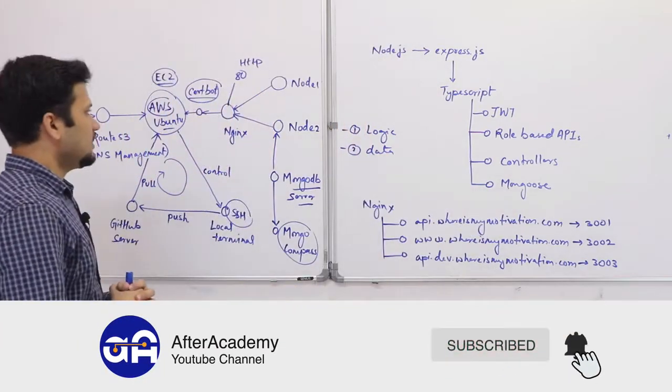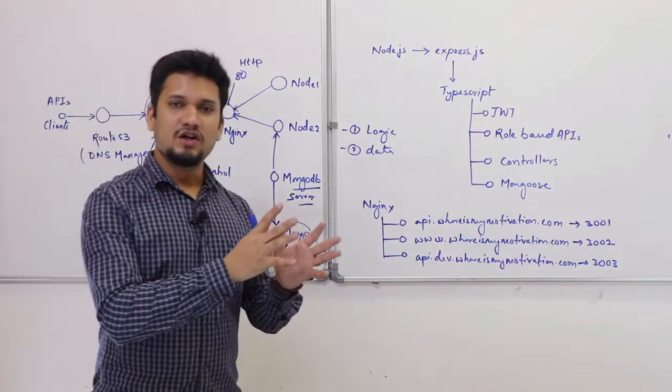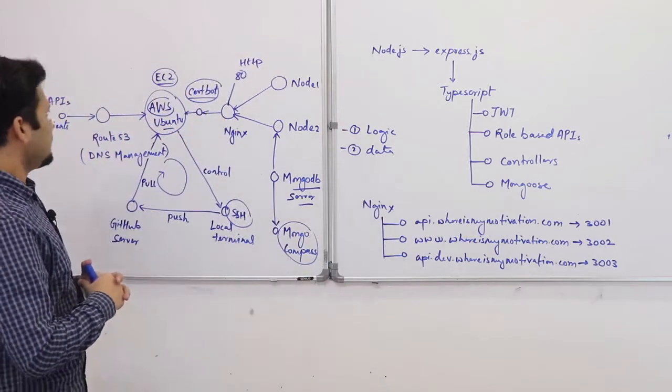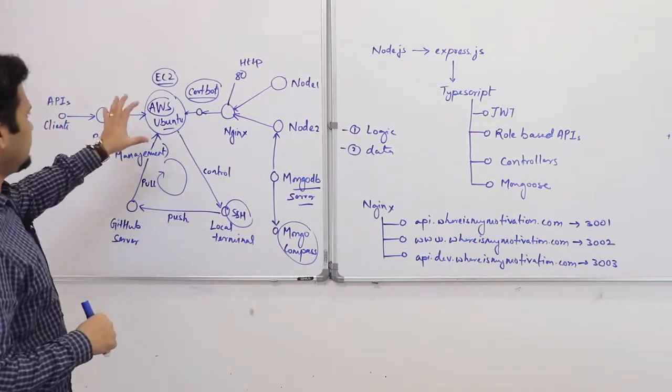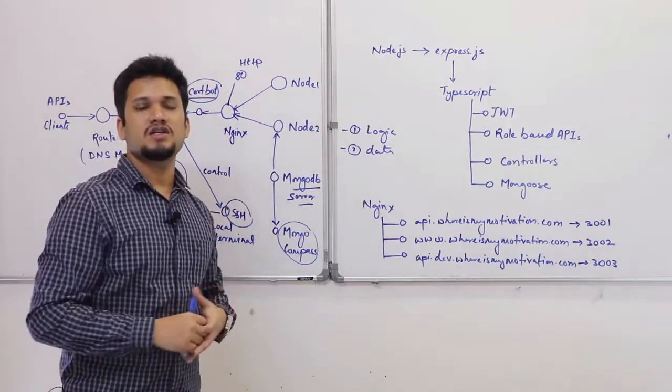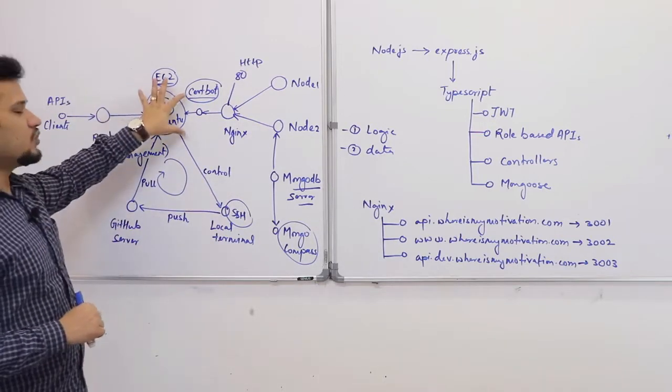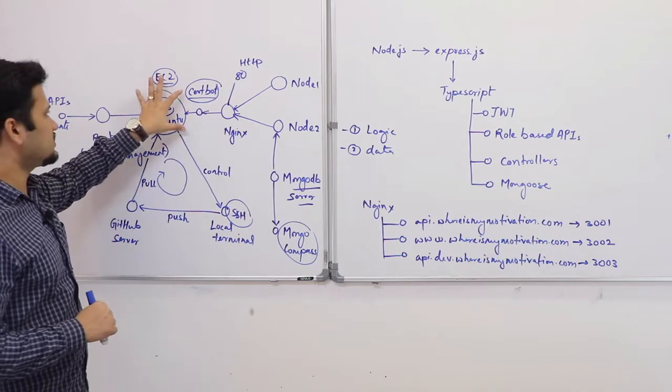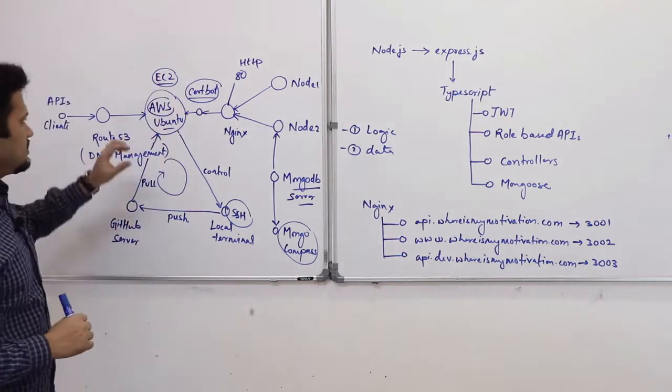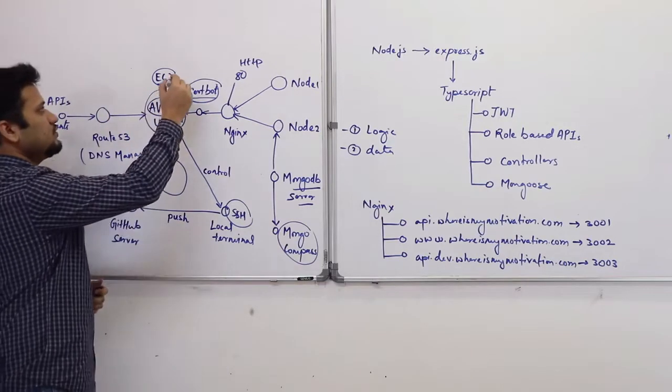Now we have developed the logic or the component idea - what major components we require. So, I will give you an overview of the architecture that I have used for my server for Where's My Motivation. First is your core - your machine, your Linux machine. I have used AWS Amazon Web Services, and here I have installed Ubuntu in the EC2 instance.